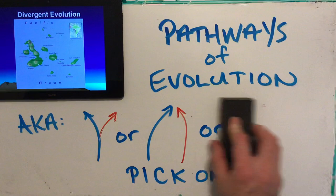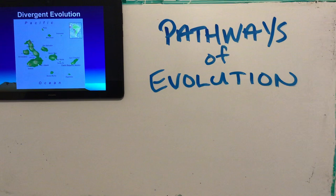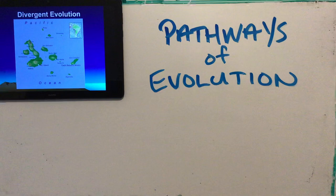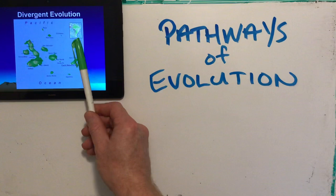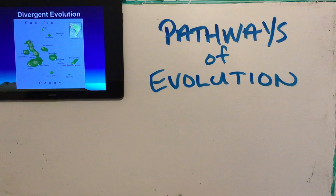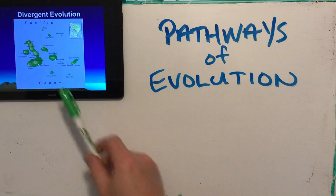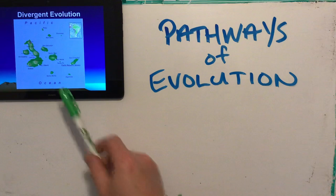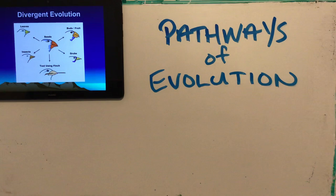Now for divergent evolution, here's a little map of South America with the Galapagos Islands shown in a red box. In reality the islands are several hundred miles from the mainland — not like swimming across the street. Here's a blown-up picture of the Galapagos Islands off the west coast of South America. Darwin's finches are an example of both divergent evolution and adaptive radiation.